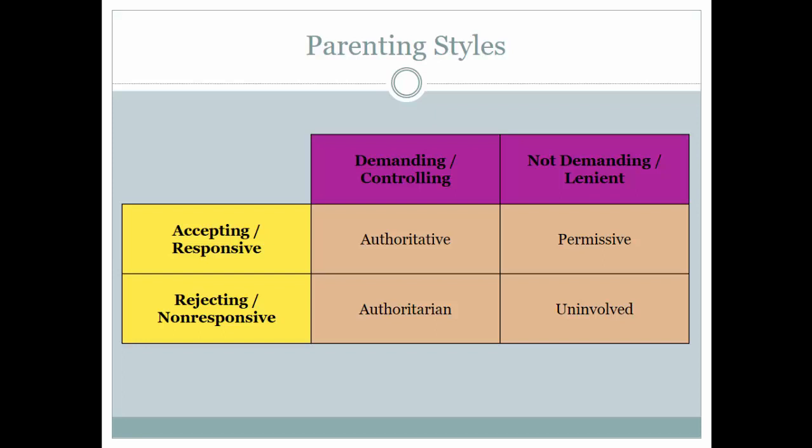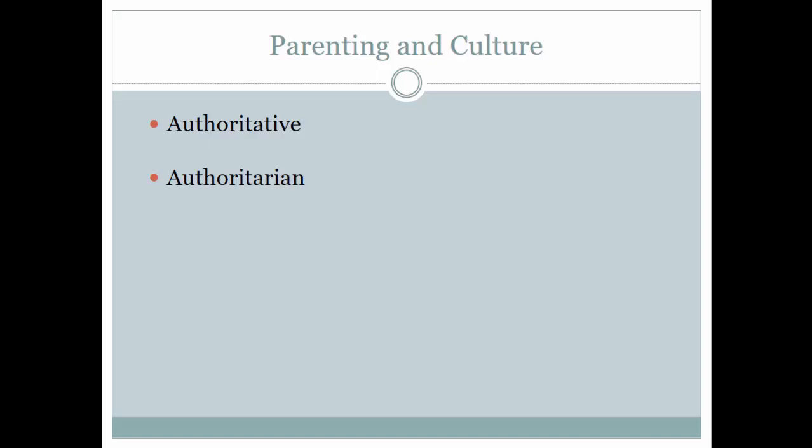Another variable that plays a big role is culture. As research has involved more diverse samples, we've learned a lot about different cultural impacts on parenting and child development. As we've studied authoritative parenting across a broader cross-section of parents, we've found that its benefits tend to transcend most demographic categories — regardless of racial differences or socioeconomic status. Socioeconomic status, or SES, is a proxy for economic prosperity — roughly equated to working class, middle class, or upper class.